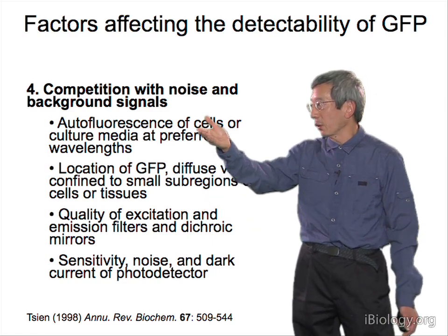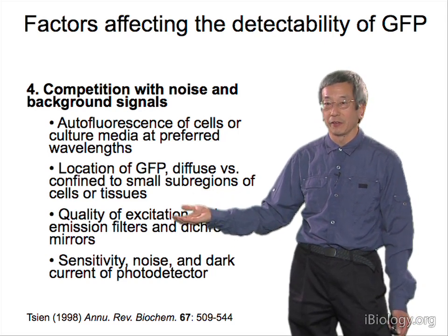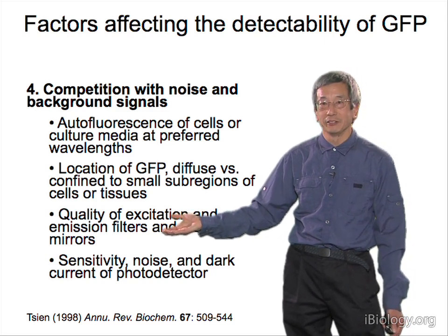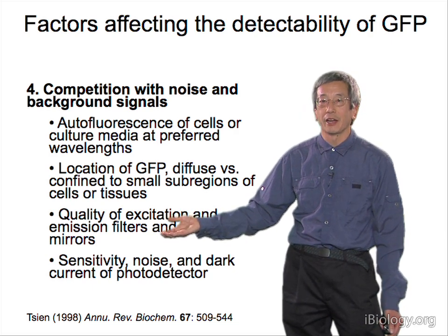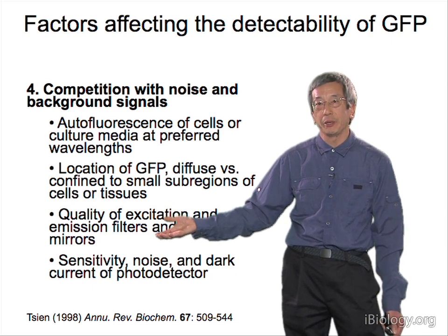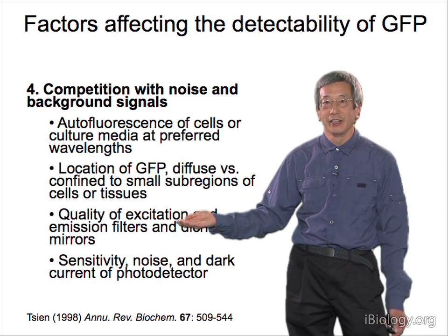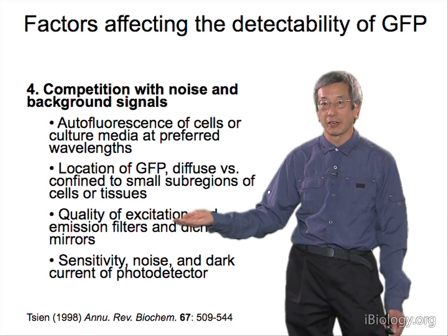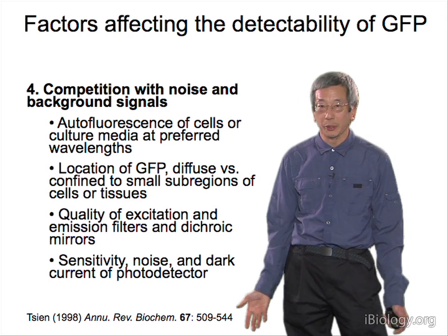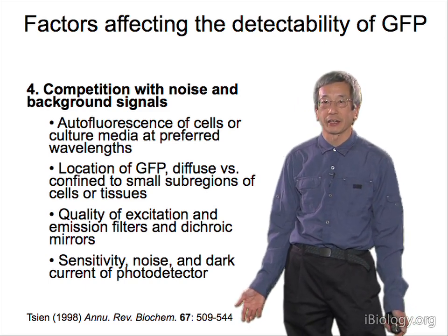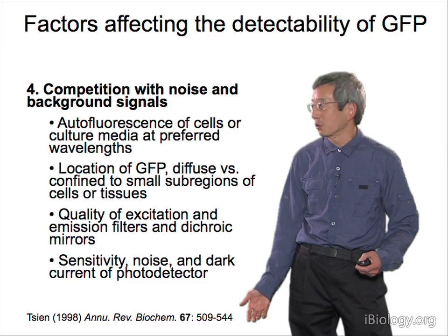Cells already have autofluorescence even when the culture media is very clean. You need very good filters that don't overlap. Many people first starting fluorescence microscopy just pick whatever filters are in the drawer under the microscope, but those are often not optimized. You need filters that accurately excite the GFP but do not enable crosstalk — crosstalk is when a little excitation light leaks through the emission filter, allowing scattered light rather than fluorescence to contribute. That requires buying better filters and dichroic mirrors. Finally, we need good detectors; your eye is quite an inefficient detector, and nowadays it's a matter of spending money on a sufficiently good camera.